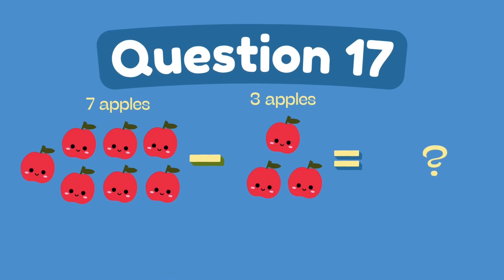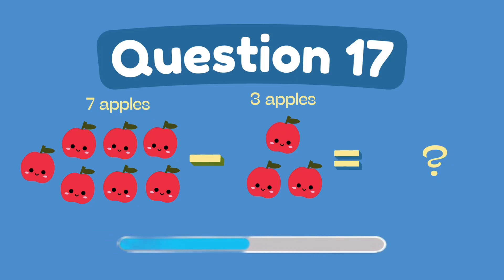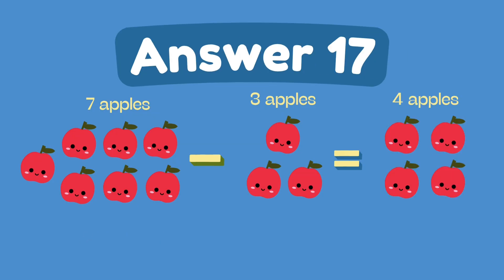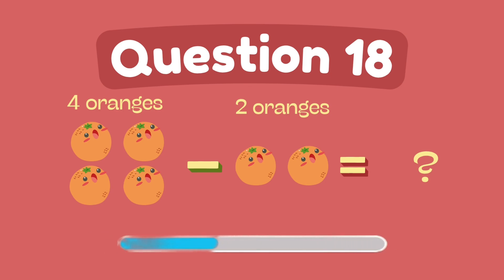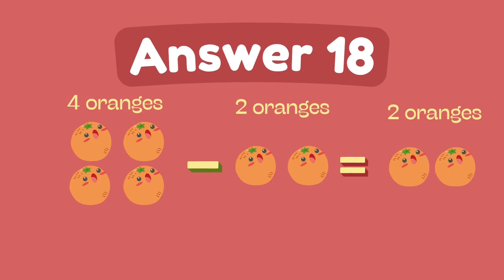What is 7 minus 3? The answer is 4. What is 4 minus 2? The answer is 2.